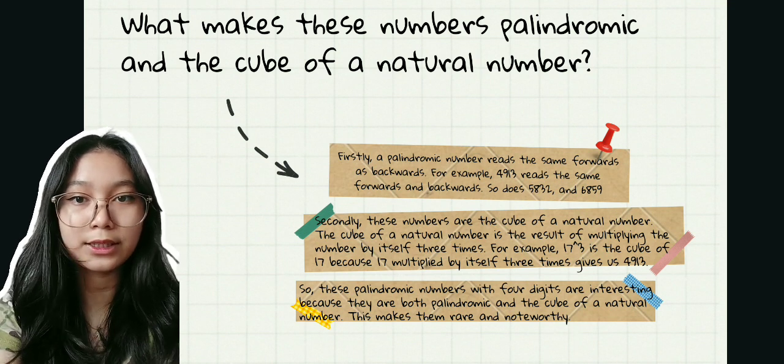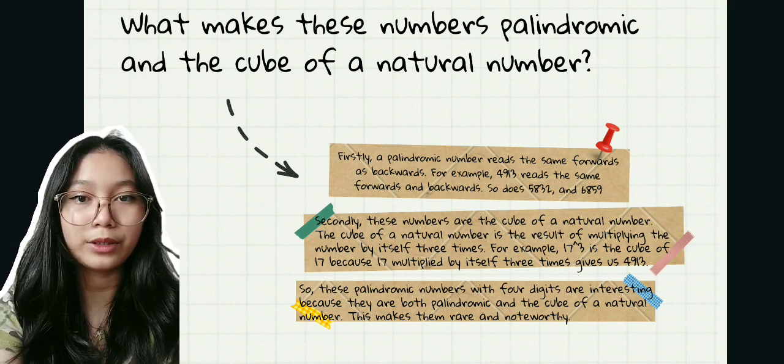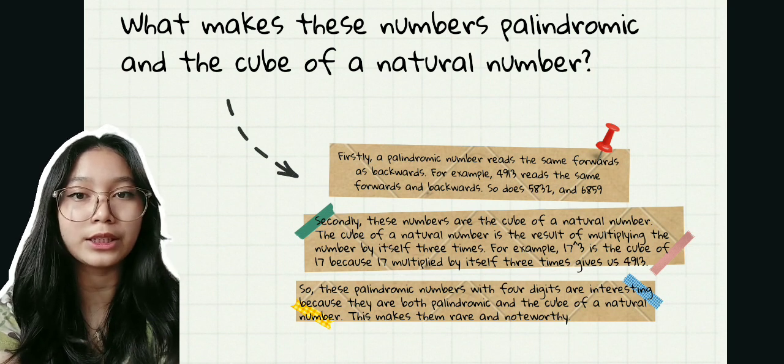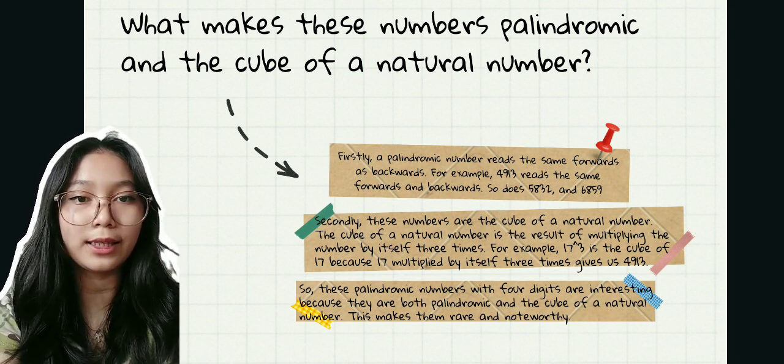For example, 4,930 reads the same forwards and backwards. So does 5,832, 6,859, and others.